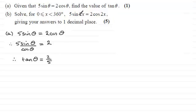Now for part (b) we've got to solve this equation 5sin2x = 2cos2x. Let's just put down part (b) first and copy down our equation: 5sin2x = 2cos2x.